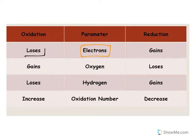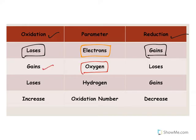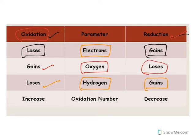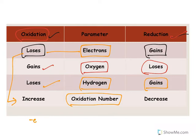Let's see the comprehensive table. When a substrate loses electrons the process is oxidation; when it gains electrons it is called reduction. With respect to oxygen, gaining oxygen is oxidation and removing oxygen is reduction. With respect to hydrogen, losing hydrogen is oxidation and gaining hydrogen is reduction. Since electrons have a negative charge, losing electrons increases the oxidation number, and gaining electrons decreases the oxidation number.